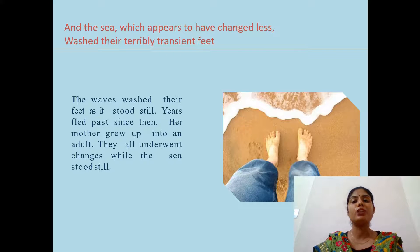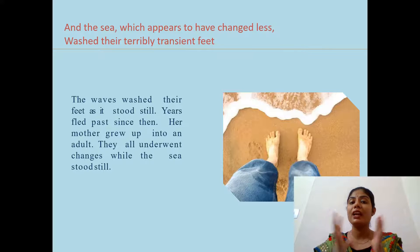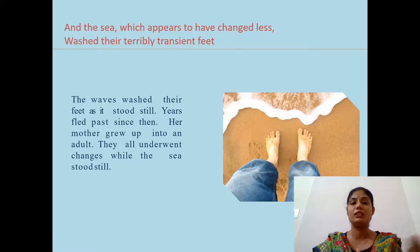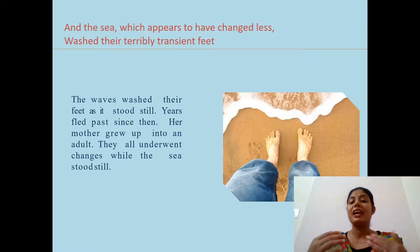'And the sea, which appears to have changed less, washed their terribly transient feet.' Two important words here: 'changeless' — referring to the sea — and 'terribly transient' — referring to the feet of the mother and her cousins. This gives a great comparison between the sea and human beings. Nature remains unchanged; the sea is still intact as it was. But the mother is no longer present. Her transient feet are gone. Within a few years, the poet has lost her mother, while the sea waves continue washing the shore.